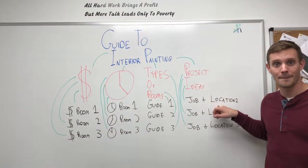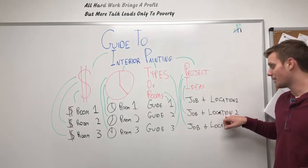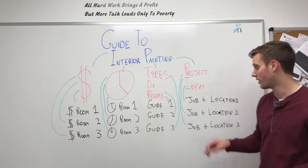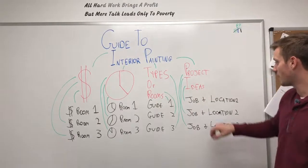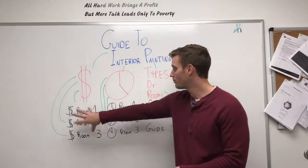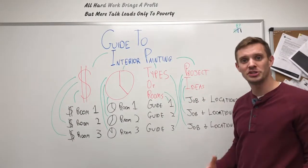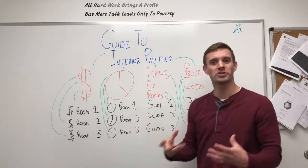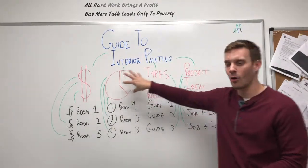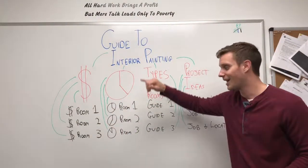The last category is project profiles — job and location. For example, bathroom painting in Washington DC, or a foyer painting in San Diego, California. You tie each one back to the main guide. So now you've got twelve blogs total — one through twelve — that all link back to this guide to interior painting.